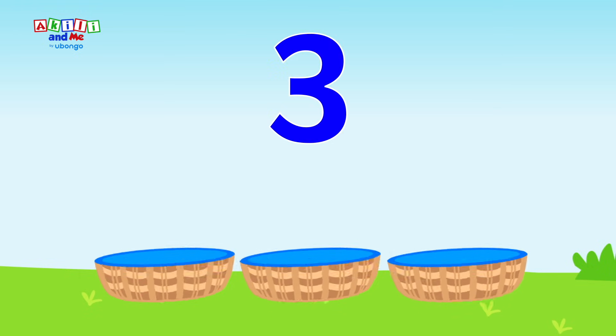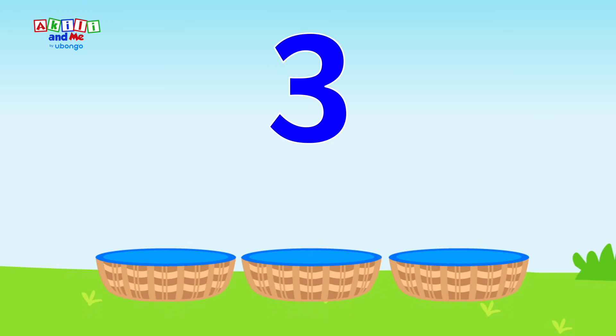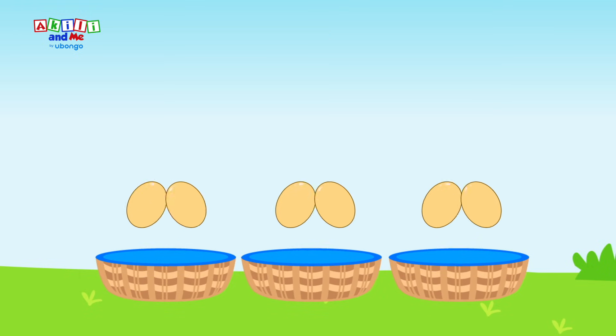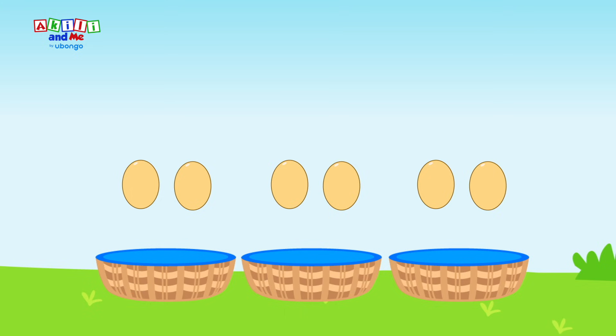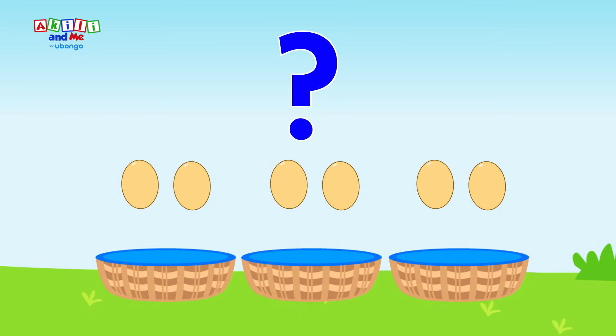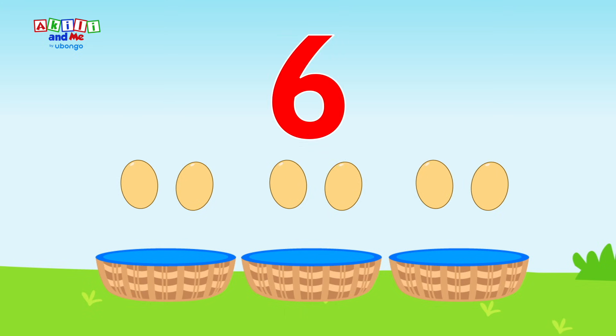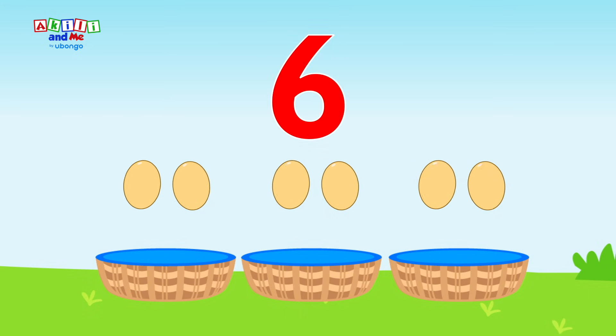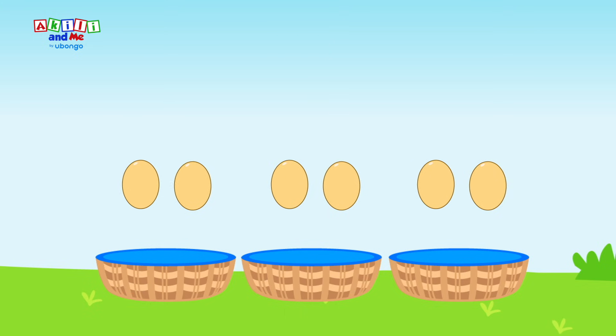We have three baskets, each one has two eggs. How many eggs are there? Six eggs all together.